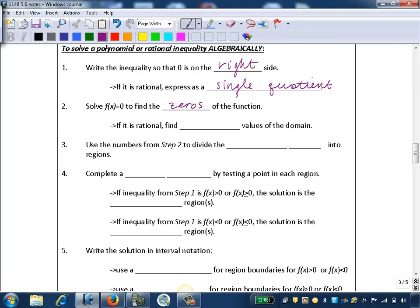If it's a rational inequality, we also want to find the excluded values of the domain. Remember those values that would make the denominator 0? Those are also important when we're solving these inequalities.